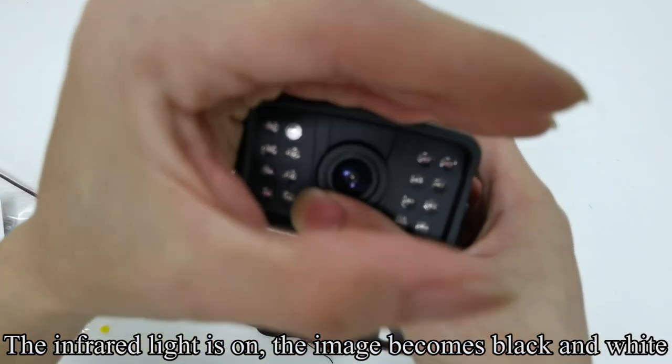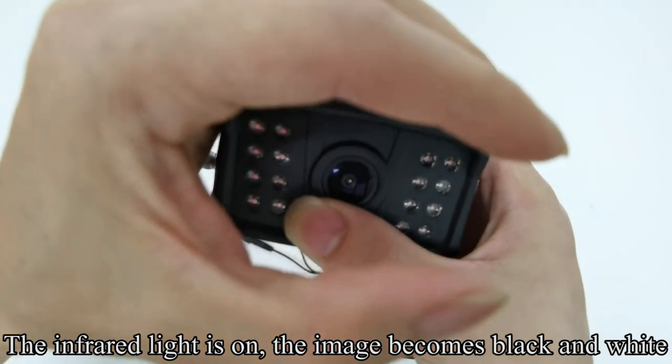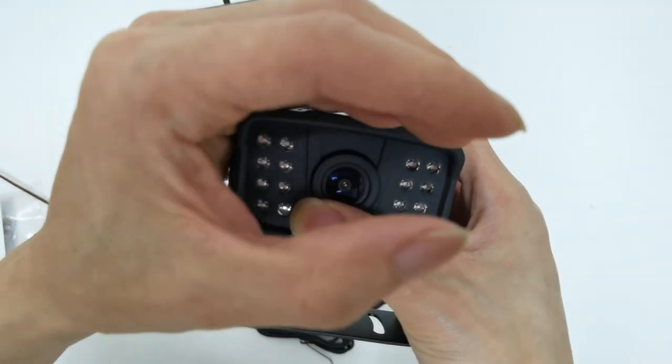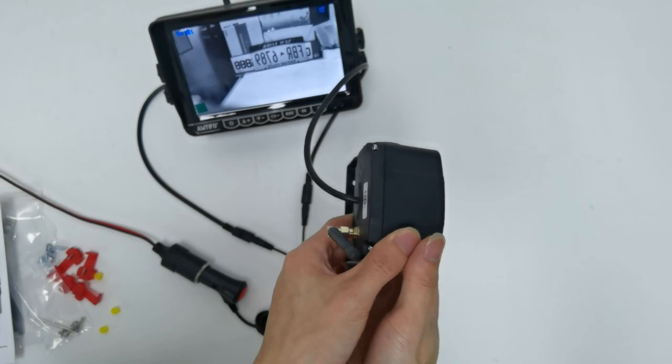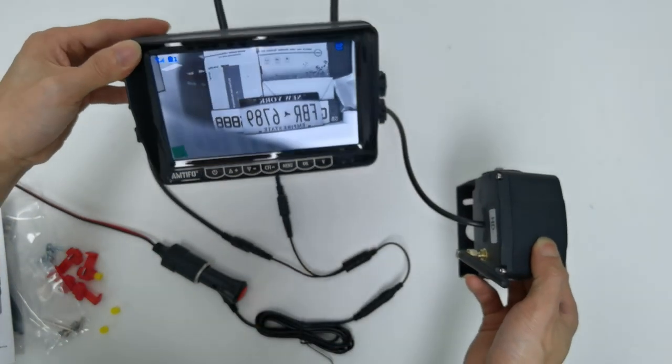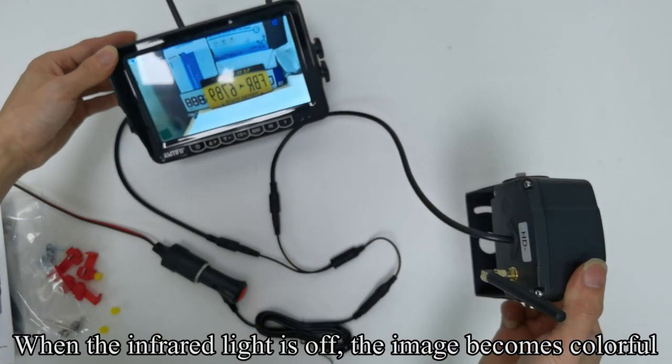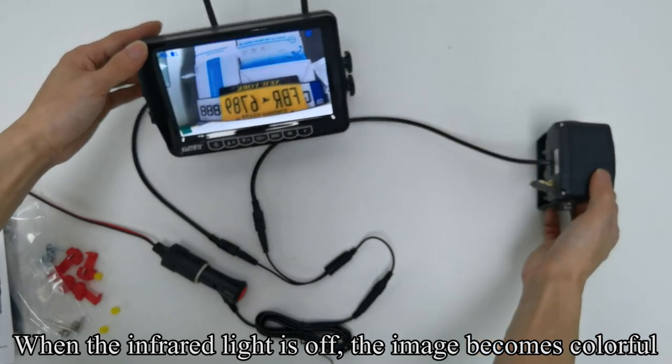The infrared light is on. The image becomes black and white. When the infrared light is off, the image becomes colorful.